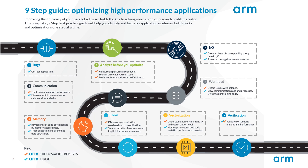This session is part of a webinar series on how to optimize high-performance computing applications. My colleagues have already explored many of the topics shown on this road to performance. If you would like to know more about IO performance, MPI imbalance, memory performance, or core utilization, feel free to have a look at our ARM YouTube channel to catch up. This webinar will investigate vectorization using ARM Performance Reports and ARM Map.